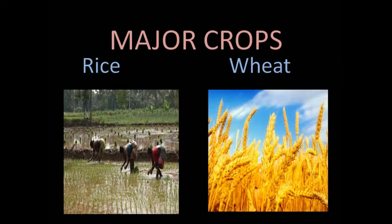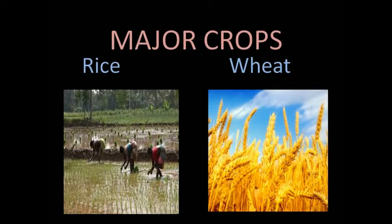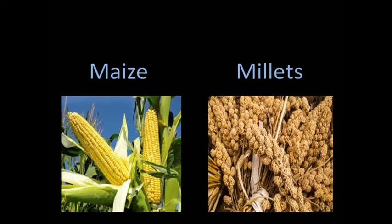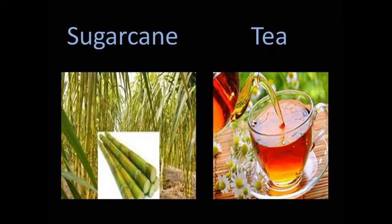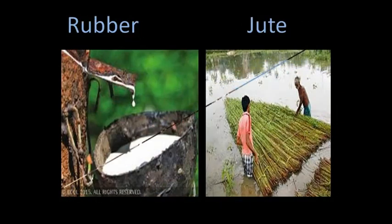In order to meet the demand for food, we grow crops. Crops are important not only in providing food but are also used as raw materials in many industries. Each crop needs a particular physical condition to grow. Some of the major crops are rice, wheat, maize, millets, sugarcane, tea, coffee, cotton, rubber and jute.